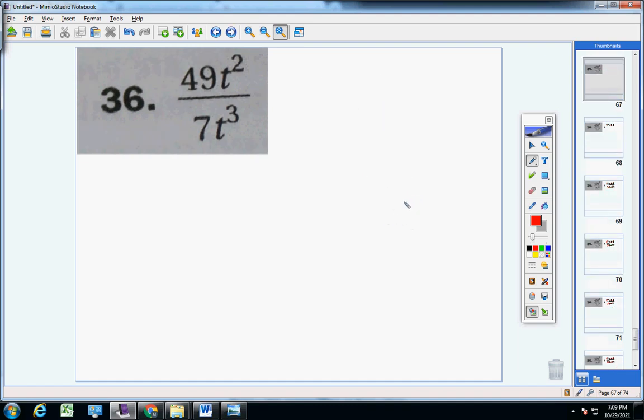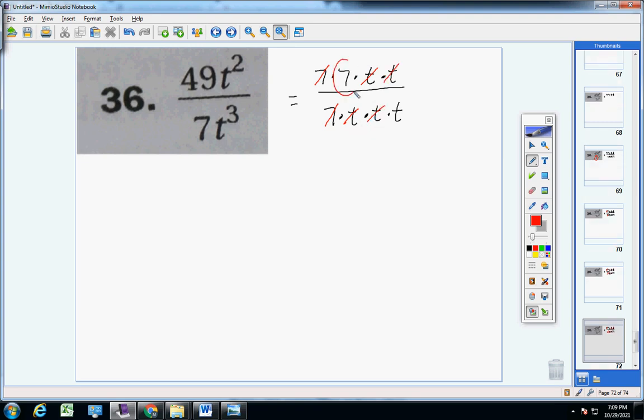Prime factors of 49, seven, seven, and you have two T's, T and T. Down here you have a seven, and then three, seven is prime, so just a seven, and then T, T, T. Now here we go. Seven's cancel, T's cancel, T's cancel, and you're left with seven over T. And that's it.